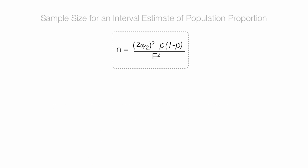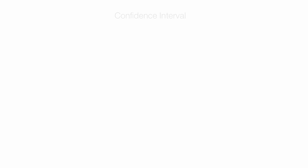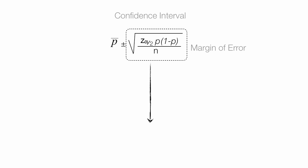So now, here we go. If I look at the confidence interval for a proportion, it looks something like this, and I'm really concerned with the margin of error. I'm going to show you how we get to this equation for sample size.